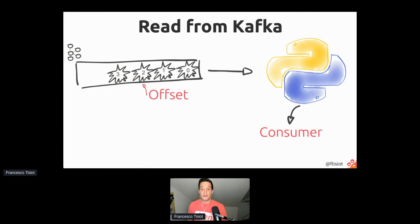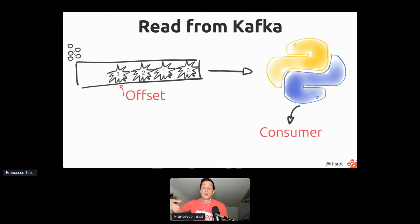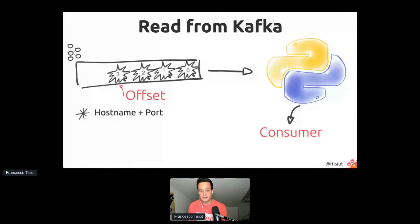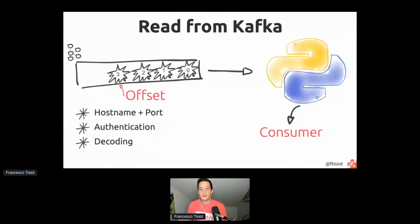Once we produce the data into Kafka, we want to consume — read the data from Kafka — and we do that with another Python application called the consumer. The consumer reads one event at a time and communicates the offset back to Kafka. So message zero is read at offset zero, message one at offset one, and so on. This is important because computers are not entirely reliable — our consumer could go down, and when we recreate an instance we don't want to restart parsing from the beginning of the log. Since Kafka knows the last offset, it will send only new events that weren't read before.